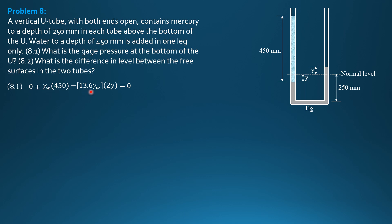Divide everything by specific weight of water, we can cancel that. So 450 divided by quantity 13.6 times 2, that's the value of Y. So Y is 16.54 mm.